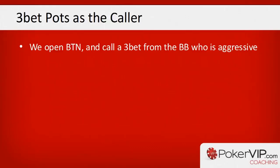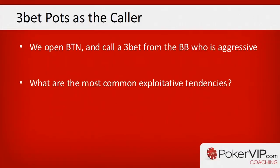The first example is we open-raise the button and we call a 3-bet from the big blind. In terms of population reads, it's good to have a default strategy, especially for the lower limits, and the way we can do this is by having an idea about what the most common exploitative tendencies of our opponents are.